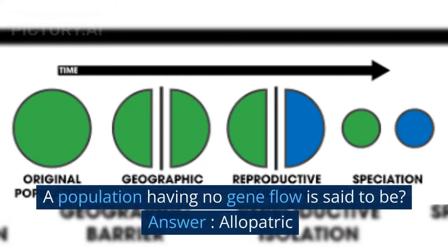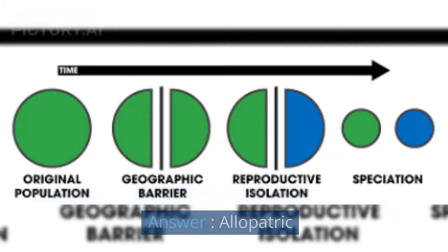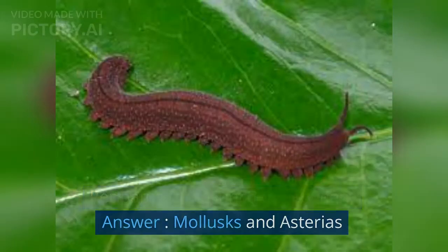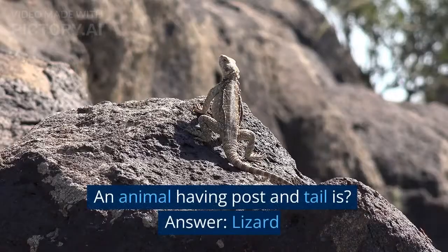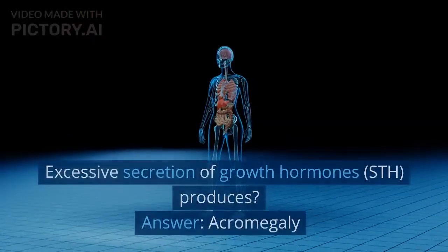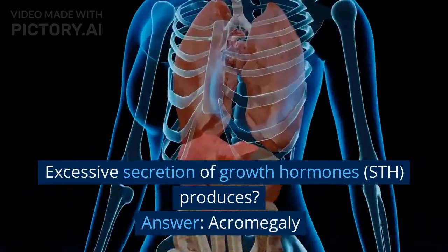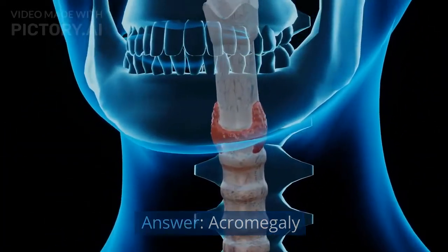A population having no gene flow is said to be? Answer: allopatric. Peripatus is the junction between? Answer: molluscs and arthropods. An animal having a post-anal tail is? Answer: lizard. Excessive secretion of growth hormones, STH, produces? Answer: acromegaly.